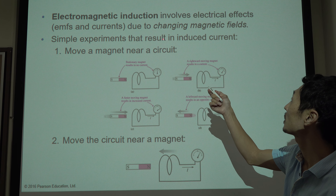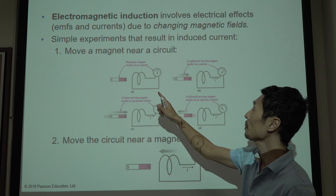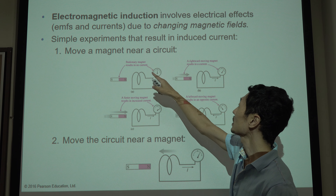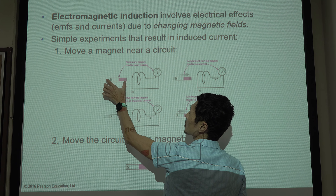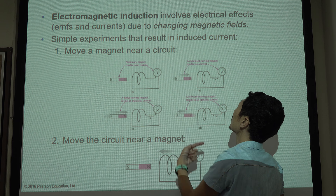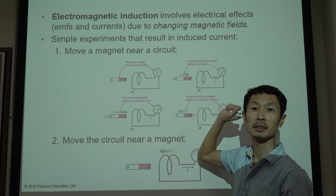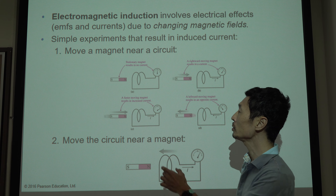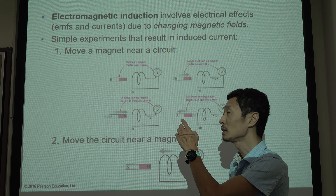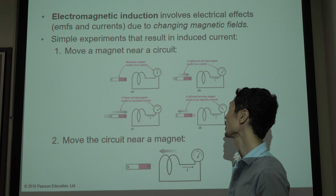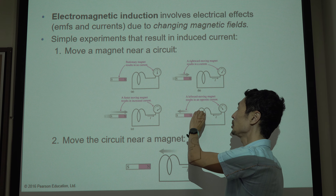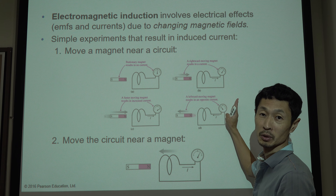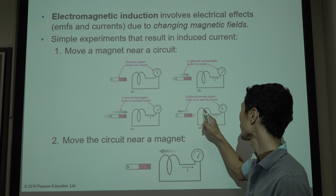Simple experiments result in induced currents. Here is a magnet, and here is a circuit. If you move the magnet into the circuit — move it closer — then you get a current in the circuit. This is induced current. If you move the magnet faster, there is more current. If you move it away from the circuit, you also get current, but in the opposite direction.